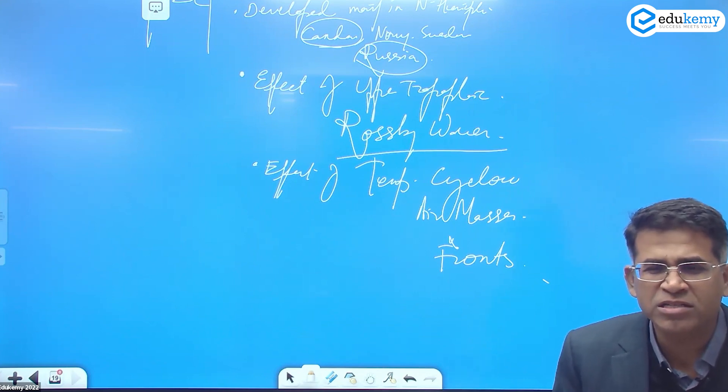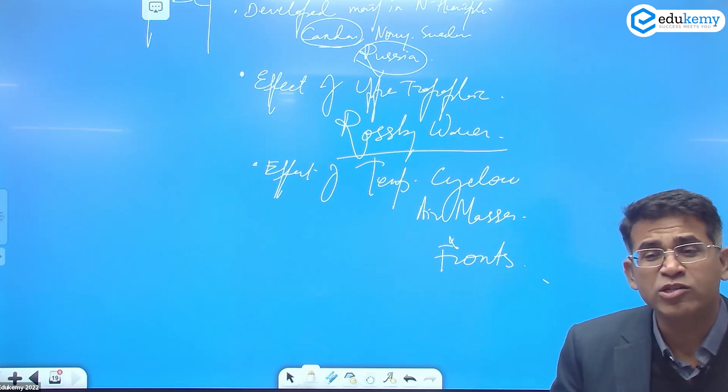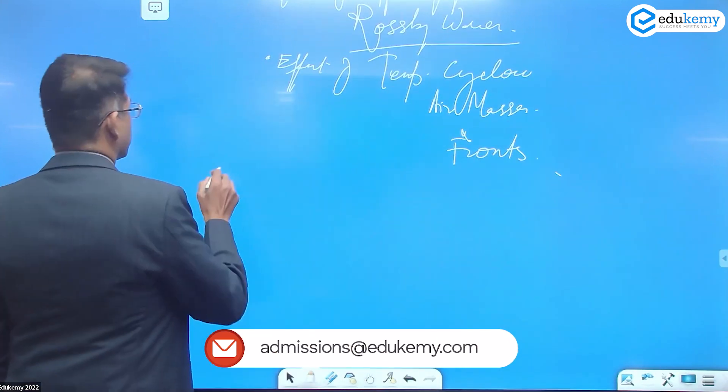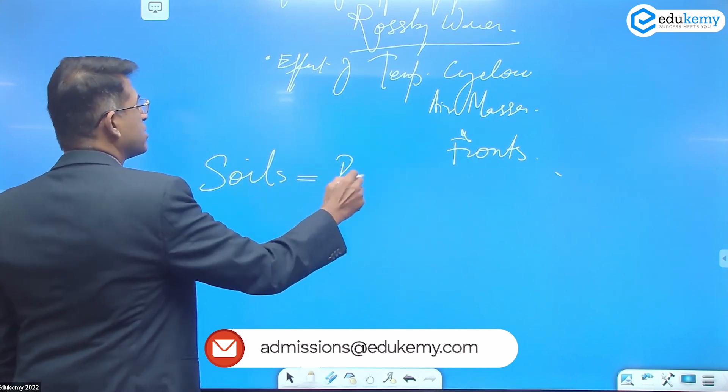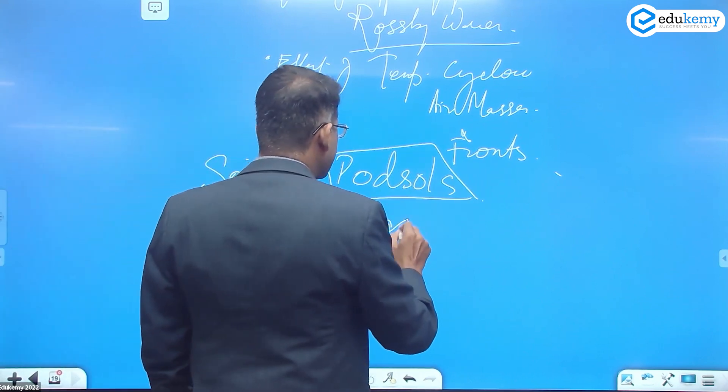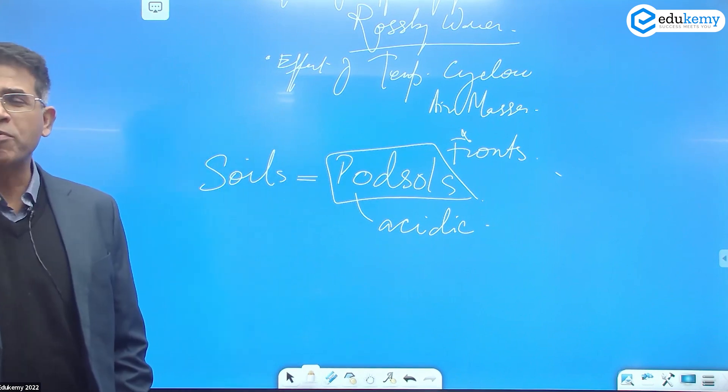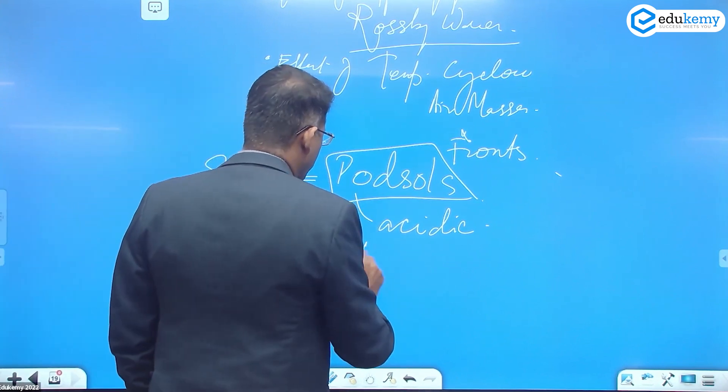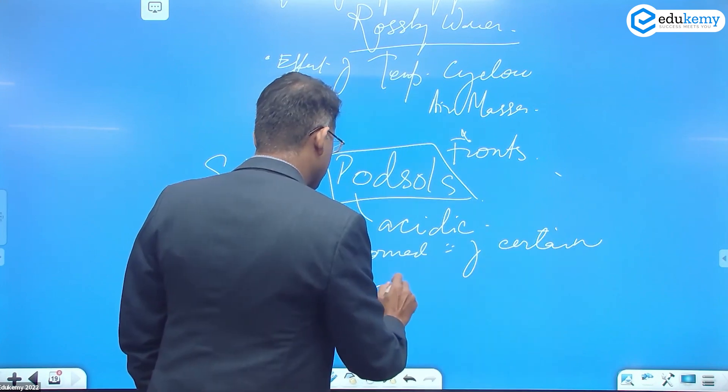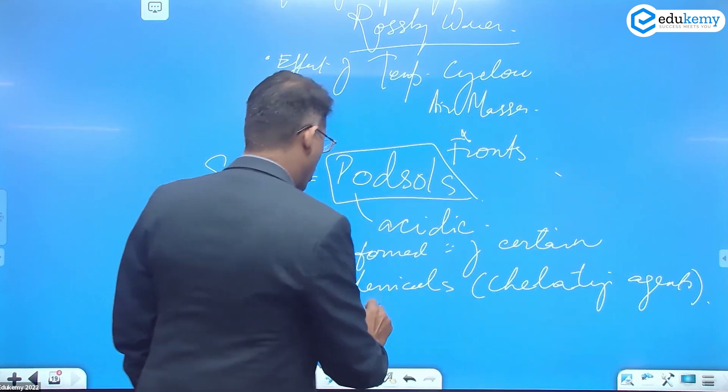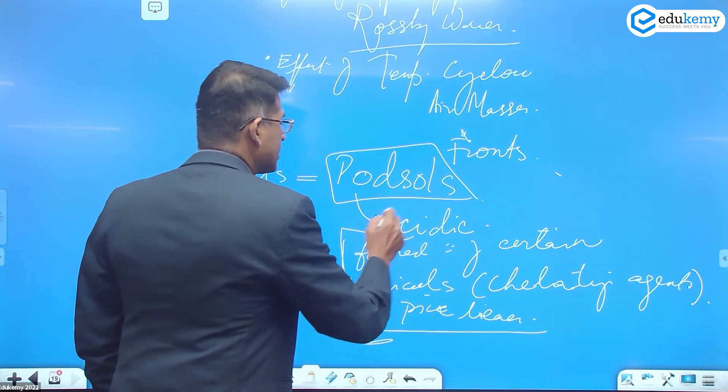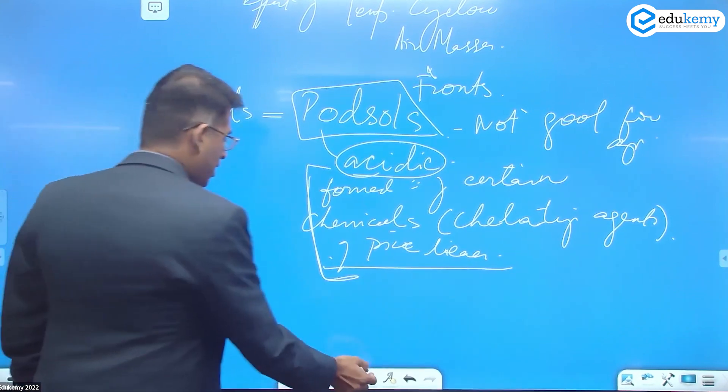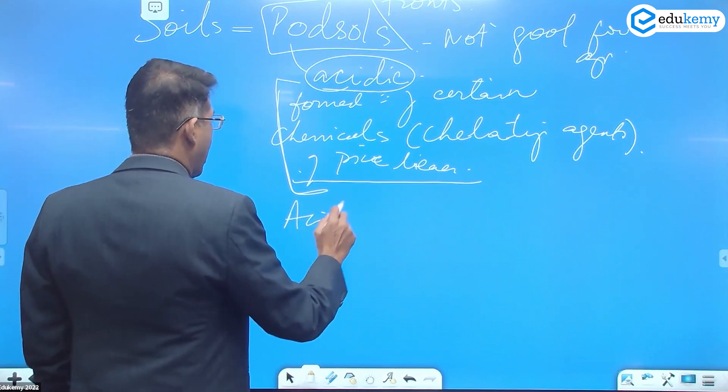The soils are not very fertile. The soils are a special type called podzols, acidic soils. They are not good for cultivation. They are formed because of some reaction with certain chemicals of the pine leaves. They are formed because of certain chemicals called chelating agents of the pine leaves. They are special type of soils, acidic soils, not good for agriculture. Because of acidic conditions this is not good quality.